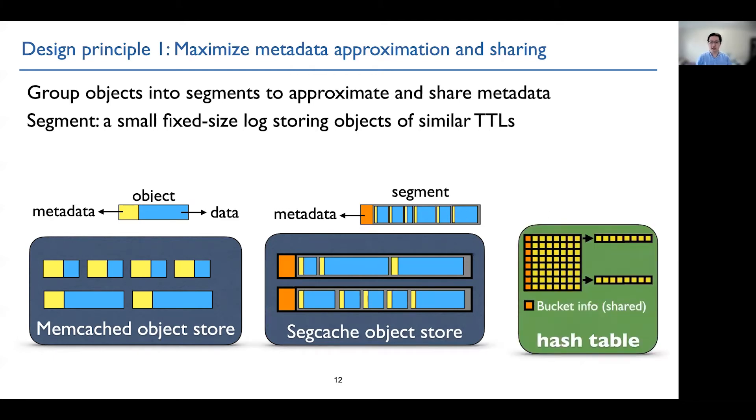Besides sharing in segment, we also have sharing in hash bucket. So each hash bucket has eight slots, and seven slots are used to store item information, while the first slot is used to store some shared metadata between all the items hashed to this bucket.